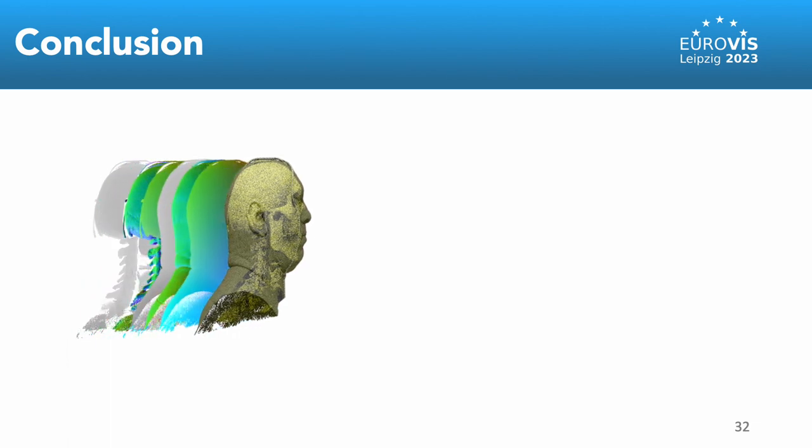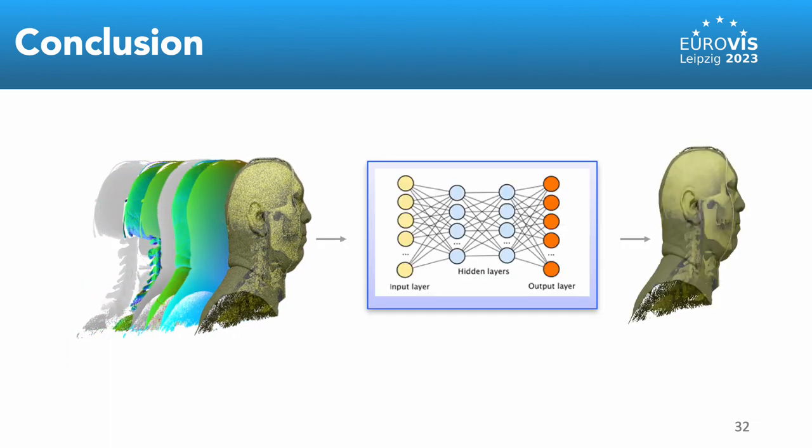In conclusion, we study neural denoising in the volumetric domain and propose auxiliary features that boost the quality performance of the denoiser, achieving more than 7 times speedup factors in rendering time. We believe our work will inspire future research to experiment with different features that effectively guide volume denoisers in real time. Thank you.